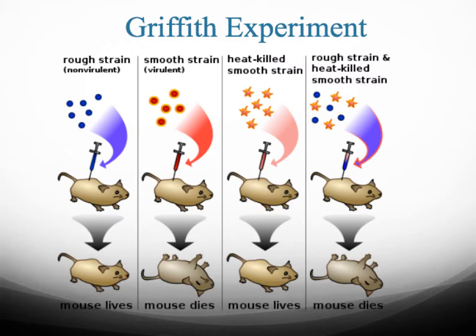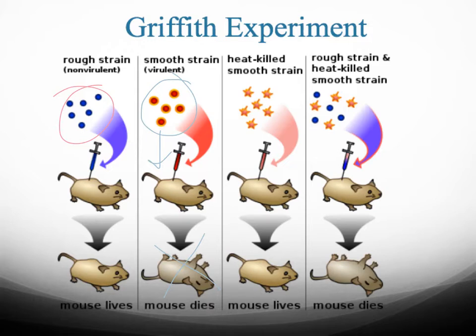In Griffith's experiment, he took the rough strain of bacteria and injected that into the mouse, and the mouse lived. Then he took the smooth bacteria and put it in the mouse, and the mouse died. The next thing he attempted was to take the virulent smooth strain of bacteria and heat-kill it by exposing it to heat. We've talked about how heat will denature proteins, and that is most likely what happened. He injected those denatured bacterial cells into the mouse, and as expected, the mouse lived because the proteins aren't going to work anymore.